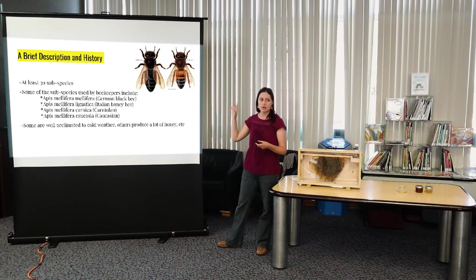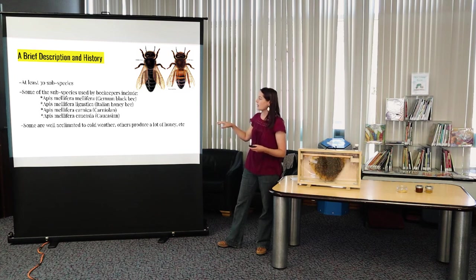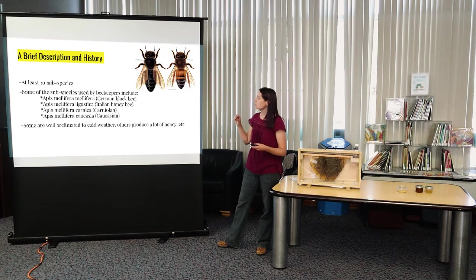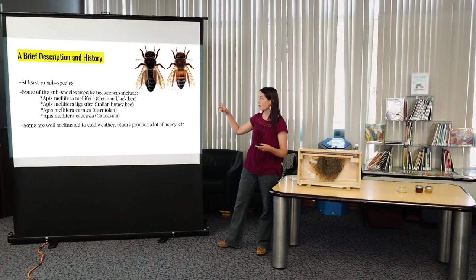But even with the honeybee, these are both Apis mellifera. So they're both honeybees, but you can see they're quite different, right? There's also 30 subspecies of honeybees and beekeepers will use these different subspecies just based on need or environment. So on the left is Apis mellifera mellifera or the German black bee. You can see why it's called that.